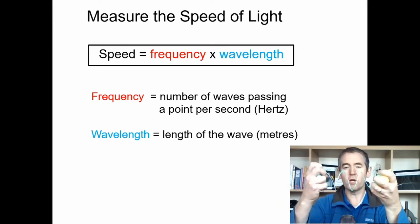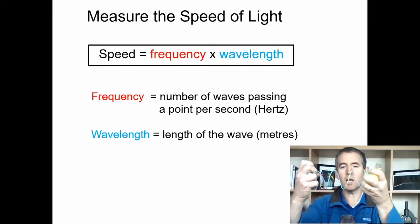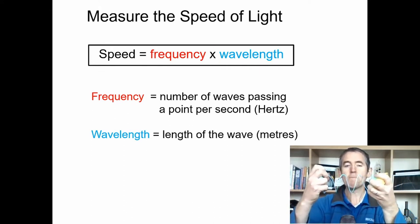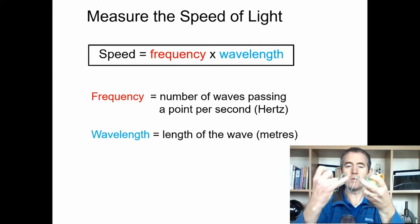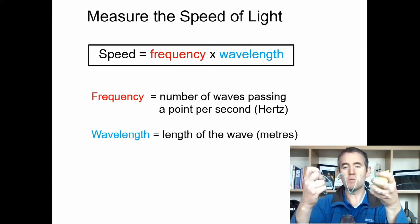The unit of frequency is one hertz. So if one wave passes in one second, that's one hertz. The wavelength then is the distance from the peak here to the peak there and that is measured in meters.